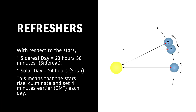Let's refresh a couple of things from the previous topics. With respect to the stars, one sidereal day is 23 hours and 56 minutes. One solar day, on the other hand, is 24 hours. This means that stars rise, culminate, and set four minutes earlier GMT every single day.